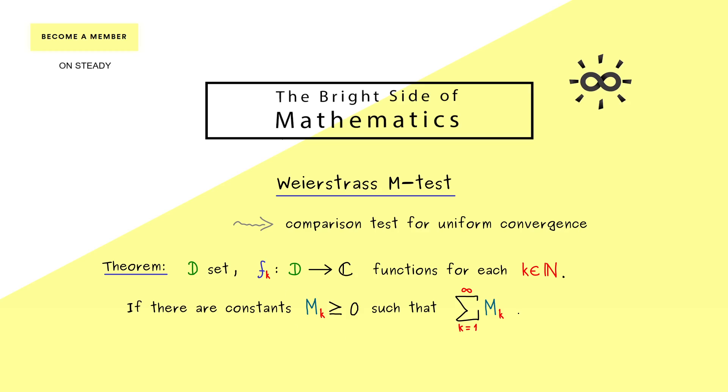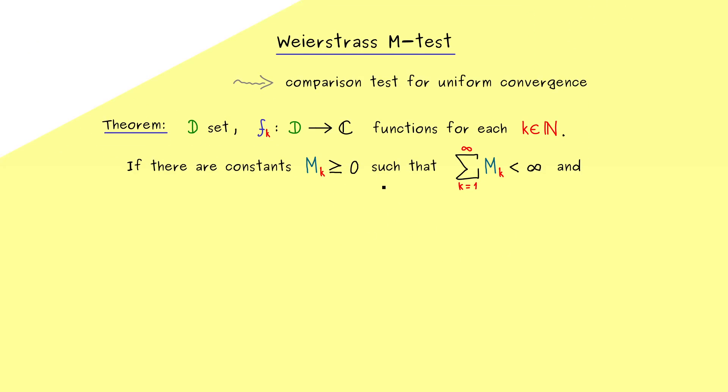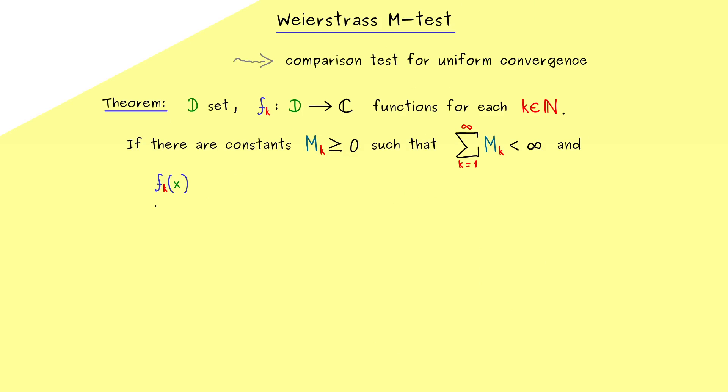This means that the limit of the partial sums should exist. In other words, the value of this series is not equal to infinity. And now in addition, the constants should be always bigger than the values of the functions fk. More precisely, we look at fk of x and take the absolute value of this. And then this should be less or equal than mk. And indeed we want that for all k in N and for all x in D. So the constants mk form a uniform majorant for the functions.